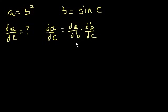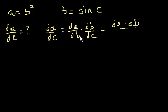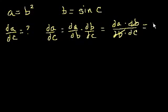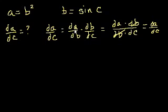You don't even have to memorize this. We're just multiplying two fractions where the denominator of the first is the same as the numerator of the second, so they cancel out. If you multiply these fractions, you'd get dA times dB in the numerator and dB times dC in the denominator — the dB's cancel, and you're left with dA over dC. The chain rule just involves these differentials, these infinitely small changes in the variables.